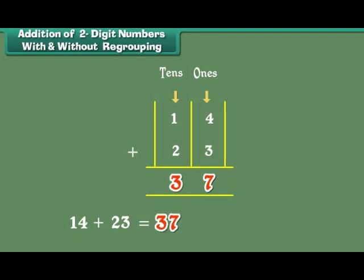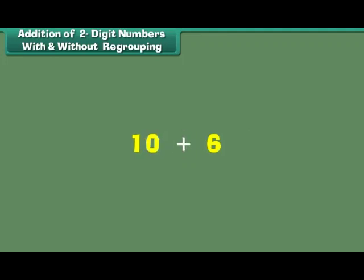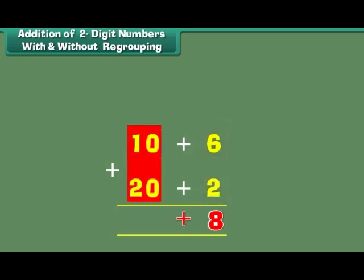We can also add two 2-digit numbers through regrouping. What is 16 plus 22? 16 can be written as 10 plus 6. 22 can be written as 20 plus 2. 6 plus 2 is equal to 8. 10 plus 20 is equal to 30. 30 plus 8 is equal to 38.